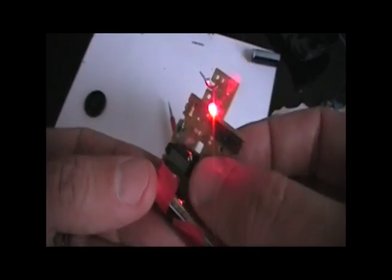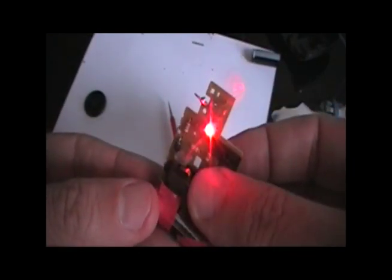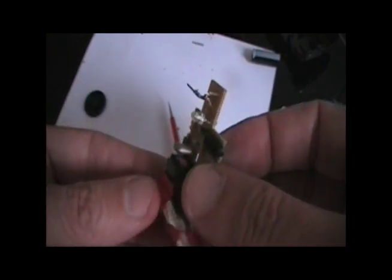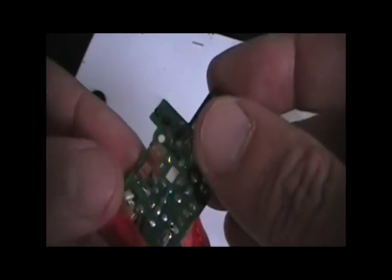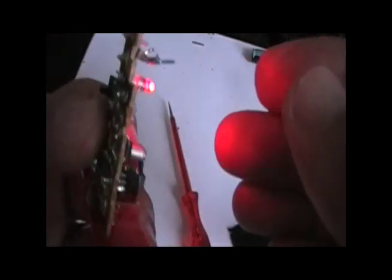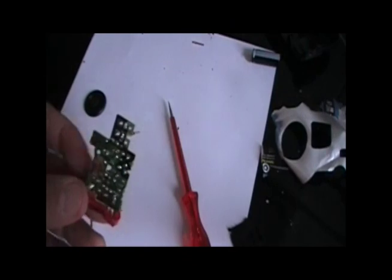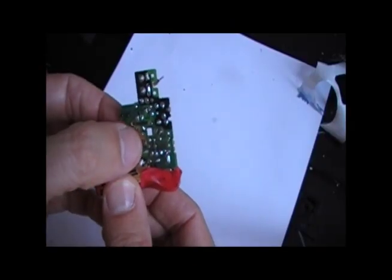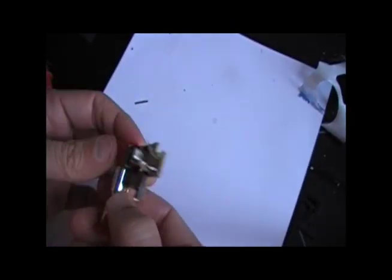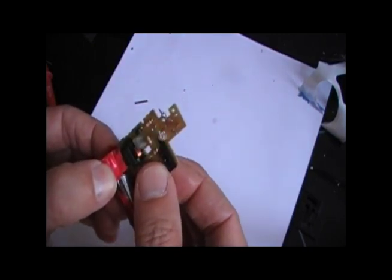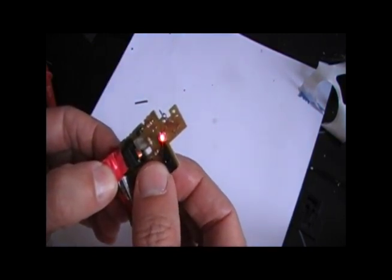And when you press it, the light goes on. And so that's what's going to be your switch for the CFL. It's right there. And when you press that switch, it closes the circuit, and that's what turns on the light that's already on the board.